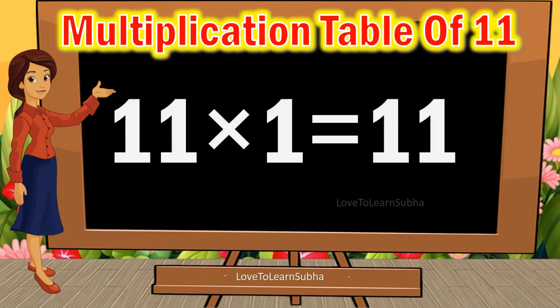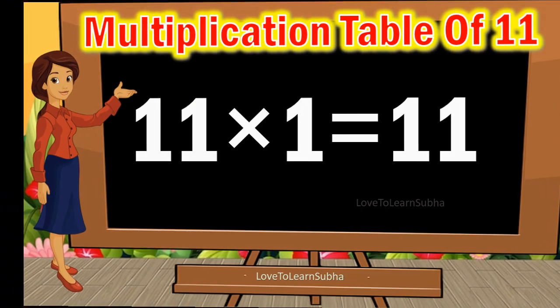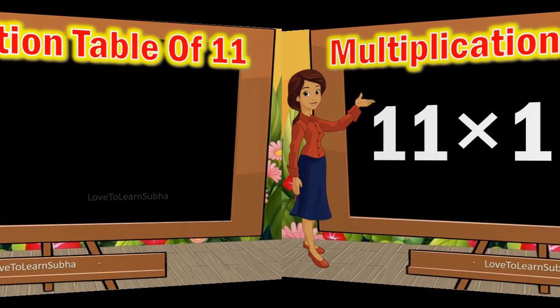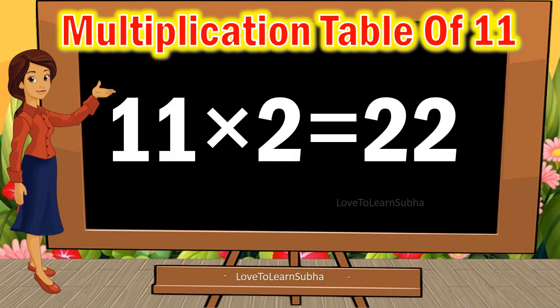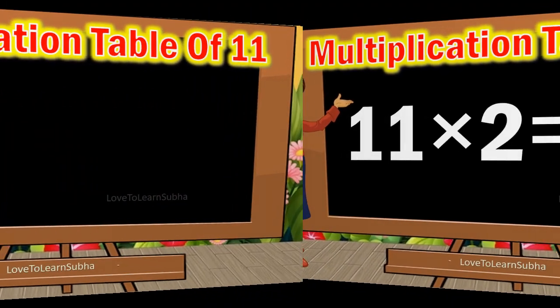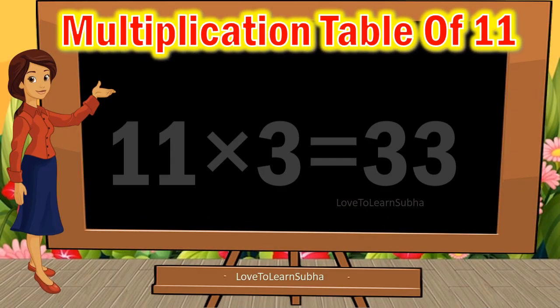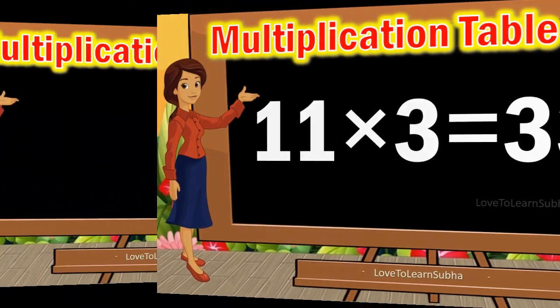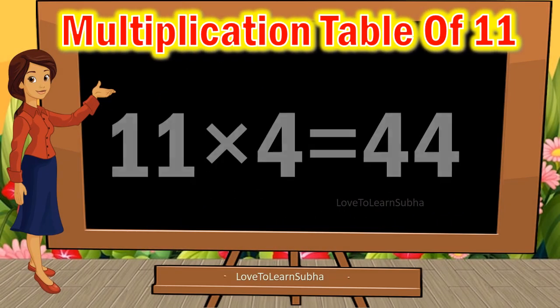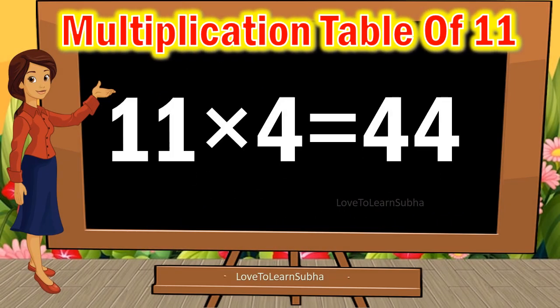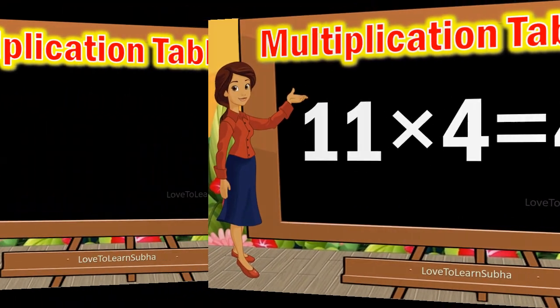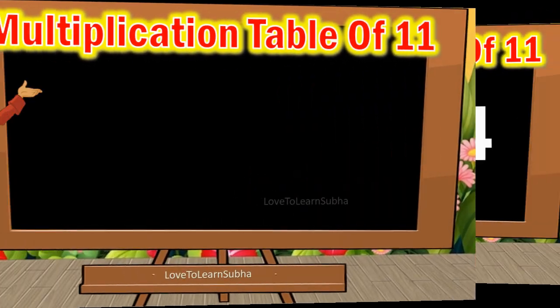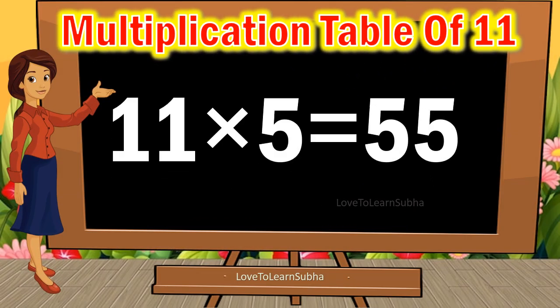11 1s are 11. 11 2s are 22. 11 3s are 33. 11 4s are 44. 11 5s are 55.